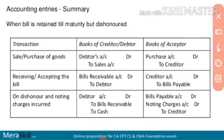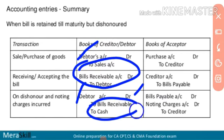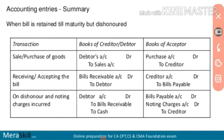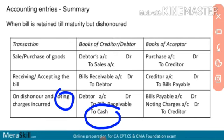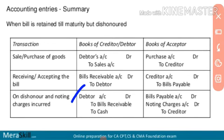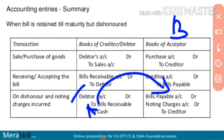Now, on dishonour of the bill when retained till maturity, in the books of A: Debtor account debit, Noting Charges account debit, to Bills Receivable account, and to Cash (for noting charges). The noting charges are debited because in future these noting charges will be recovered from B. So Debtor and Noting Charges are debited, and Bills Receivable and Cash are credited.